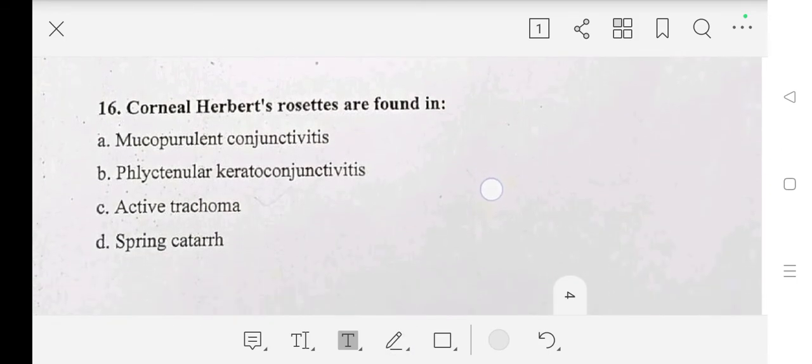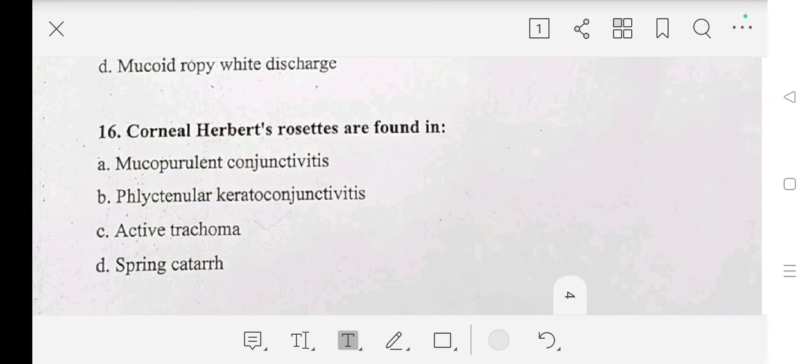Sixteenth question: corneal Herbert rosettes are found in mucopurulent conjunctivitis, phlyctenular conjunctivitis, active trachoma, or spring catarrh? Answer is active trachoma.